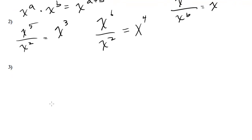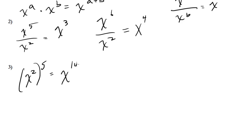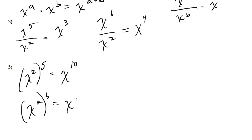Finally, the power rule. If I have x squared raised to the fifth power, you just multiply the exponents — this is the same thing as x to the tenth. The general rule is if you have x to the a raised to the b power, it's x to the a times b.